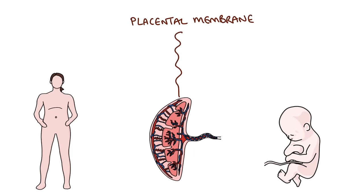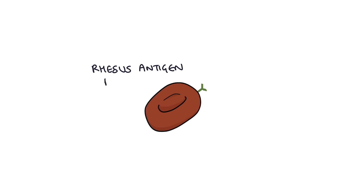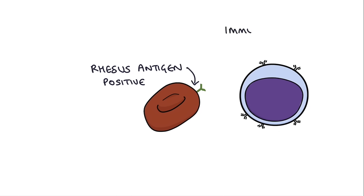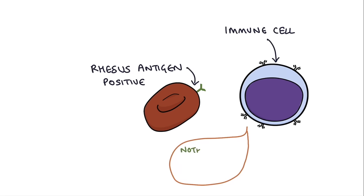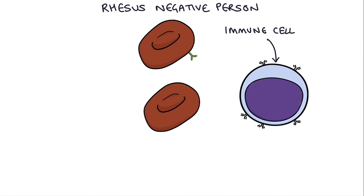So why is this important in pregnancy? It's important because of one scenario: where the mum is rhesus negative and the baby is rhesus positive. If you have the rhesus antigen on your red blood cells, your body learns to recognize it as part of your body and doesn't attack it. But when you don't have the rhesus antigen and you come in contact with it, your body thinks it's a pathogen and needs to attack it.